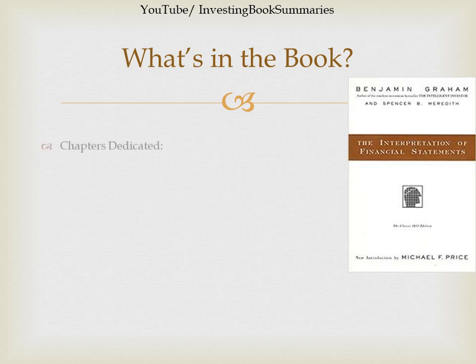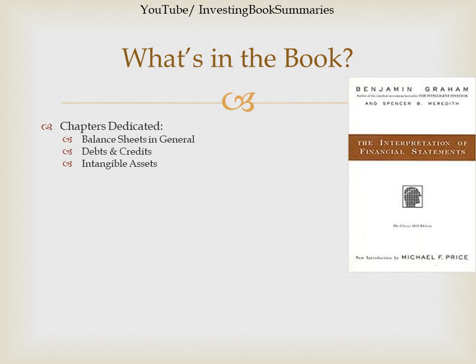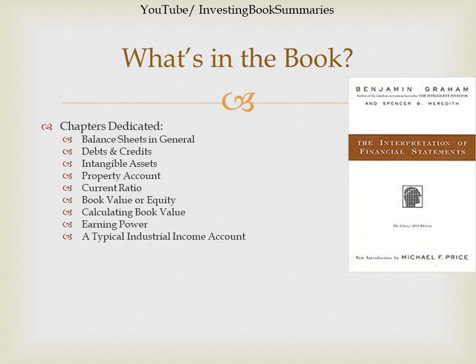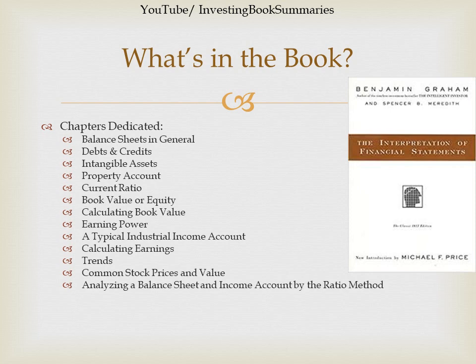What's in the book? These are the chapters that are dedicated: balance sheets in general, debts and credits, intangible assets, property account, current ratio, book value or equity, calculating book value, earning power, a typical industrial income account, calculating earnings, trends, common stock prices and value, analyzing a balance sheet and income account by the ratio method, definition of financial terms, and many more that I haven't listed here.